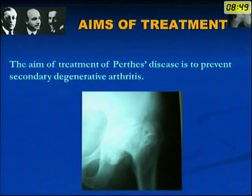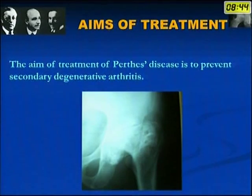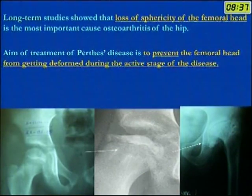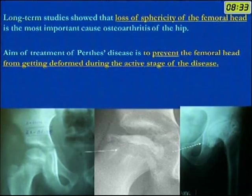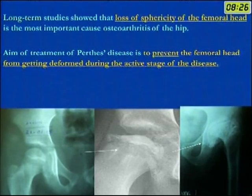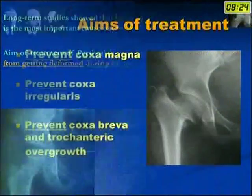What are the aims of treatment? The aim of treatment of Perthes disease is to prevent secondary degenerative arthritis in early adulthood. Long-term studies have shown that loss of sphericity of the femoral head is the most important cause of osteoarthritis of the hip, so the aim of treatment should be to prevent the femoral head from getting deformed during the active stage of the disease.